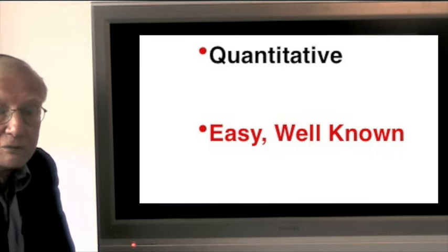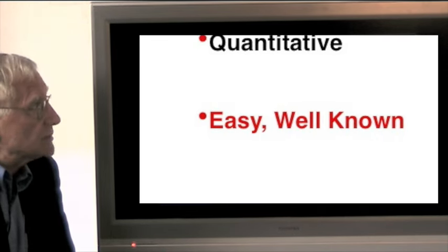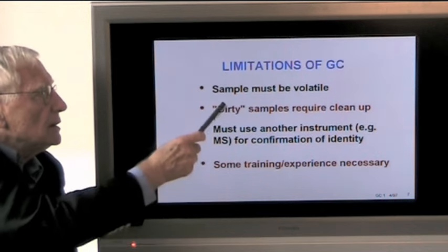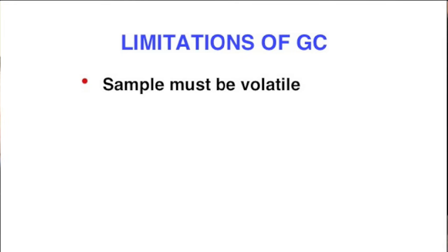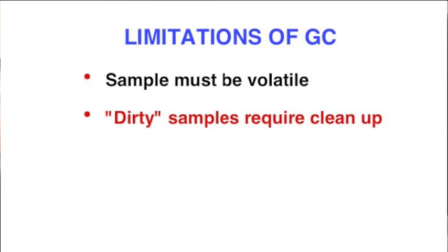But we must be honest. There are also limitations. GC, the samples must be volatile. We are allowed to heat the sample up to 300, 350 degrees centigrade. But at that point, we must generate vapors that can be easily carried by the carrier gas.